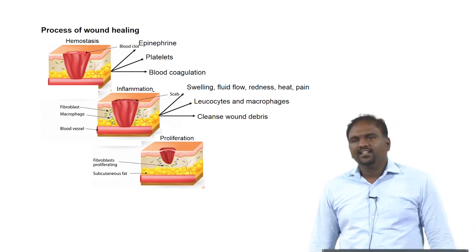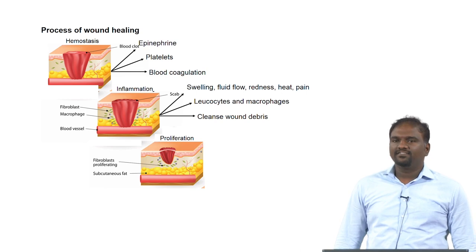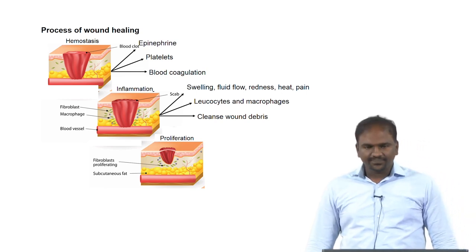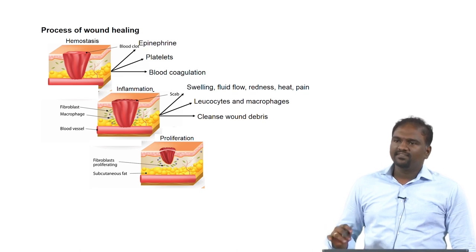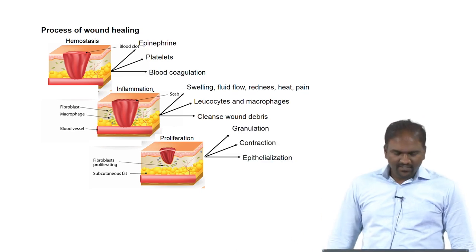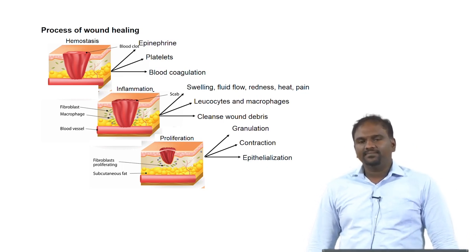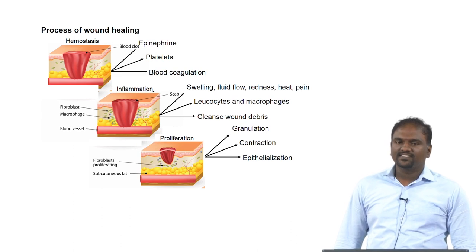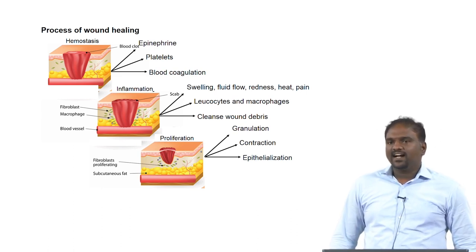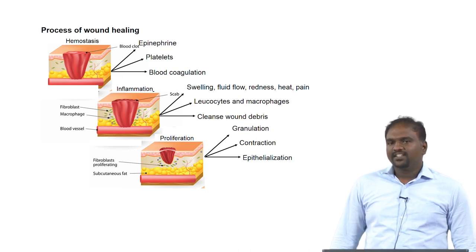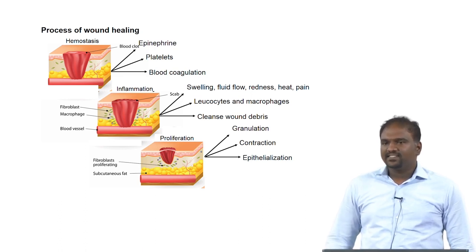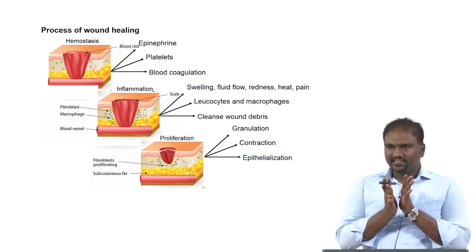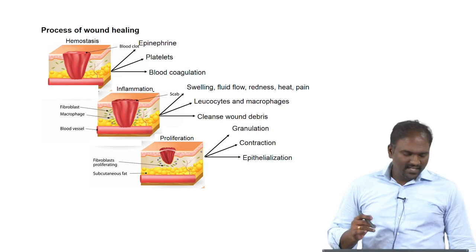The next step is proliferation, mainly involving fibroblasts in the dermis. If the wound is only in the epidermis part, that proliferation will happen with the help of keratinocytes. This involves three classifications. The first one is granulation — in granulation, the cells start dividing. If we take fibroblast in the dermis as the wound site, fibroblasts will start doubling and creating multiple cells. After that, once cells start dividing, the size will come down and contraction will happen, then epithelialization.